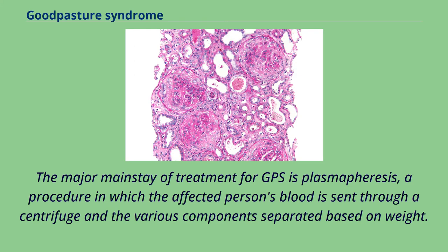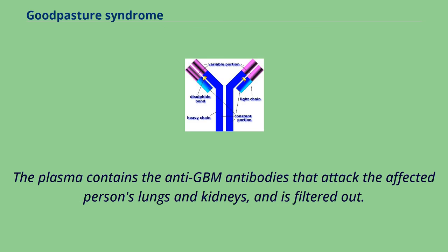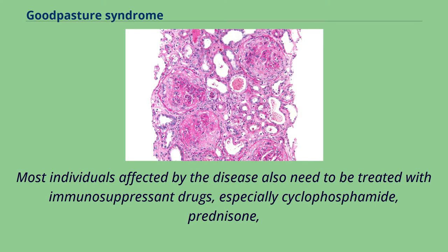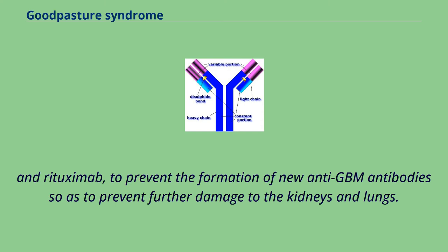The major mainstay of treatment for GPS is plasmapheresis, a procedure in which the affected person's blood is sent through a centrifuge and the various components separated based on weight. The plasma contains the anti-GBM antibodies that attack the affected person's lungs and kidneys and is filtered out, while the other parts of the blood are recycled and intravenously re-infused. Most individuals also need to be treated with immunosuppressant drugs, especially cyclophosphamide, prednisone, and rituximab, to prevent the formation of new anti-GBM antibodies and further damage to the kidneys and lungs.